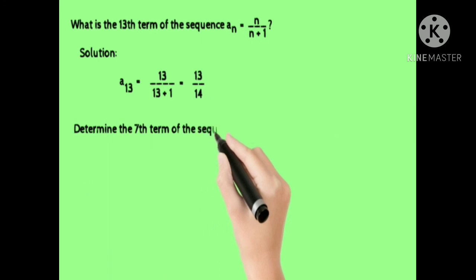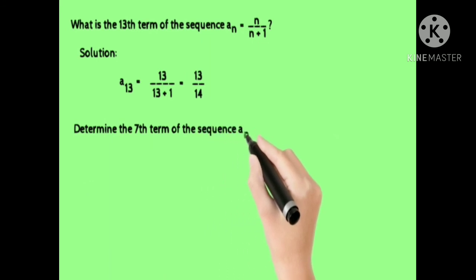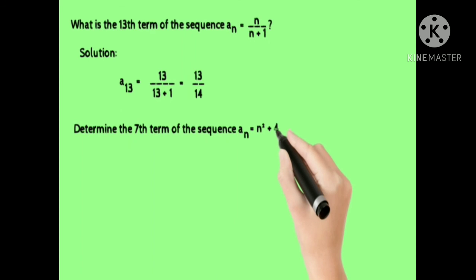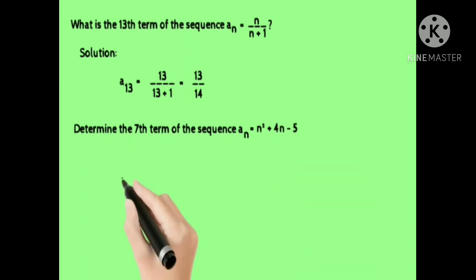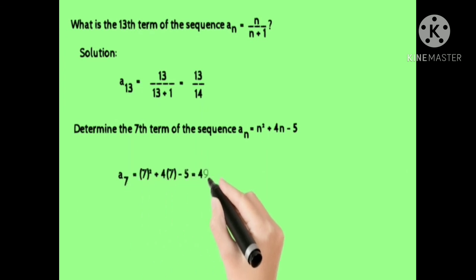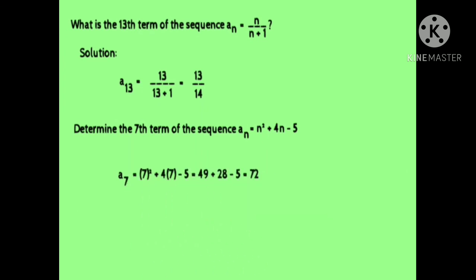Another example: determine the seventh term of the sequence where a sub n is equal to n squared plus 4n minus 5. Look only for the seventh term, so plug in 7 for n. That is equal to a sub 7 equals 7 squared plus 4 times 7 minus 5, which equals 49 plus 28 minus 5. Simplify — you will get 72.